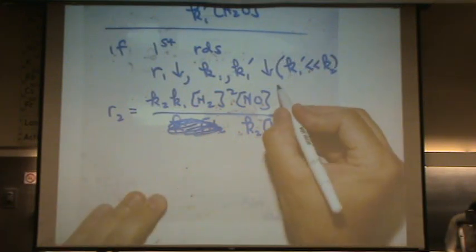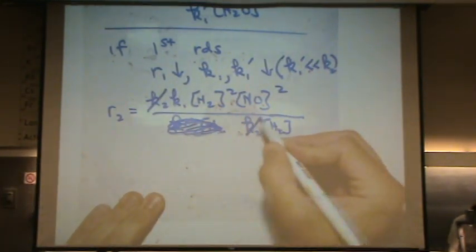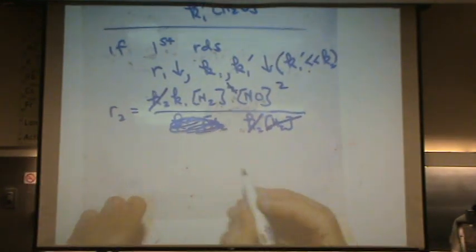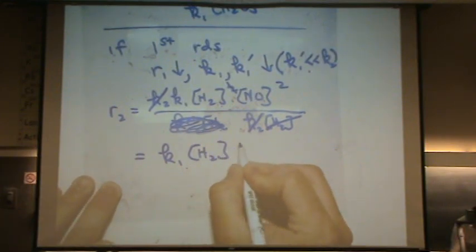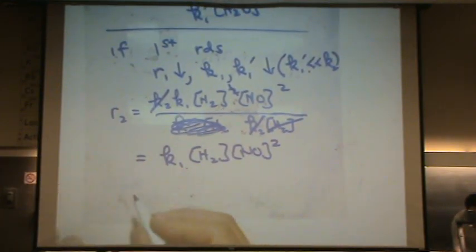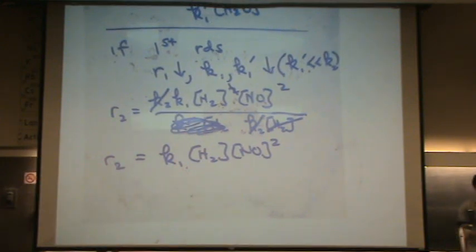Oh, and I forgot to square this. Okay, now let's simplify. Rate two is K1, H2, NO squared. Where have you seen that before? It was the very first answer. So here, it doesn't matter which one is the rate determining step because this has both answers within it. Okay? So this, you can see it's the most exhaustive, most general way of solving a problem.